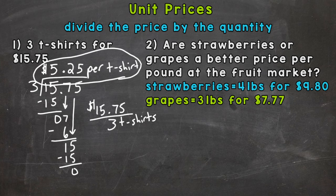take a look at number two. Are strawberries or grapes a better price per pound at the fruit market? Strawberries are 4 pounds for $9.80. Grapes are 3 pounds for $7.77. So we need to find out which one is less per pound. So again, divide the price by the quantity. So